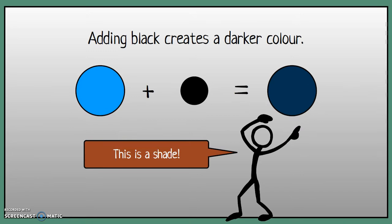So by adding some black to the blue, notice the small circle from the black in this case, I'm going to create myself a darker blue. And this is a shade. So I'm making a different shade of that original blue.